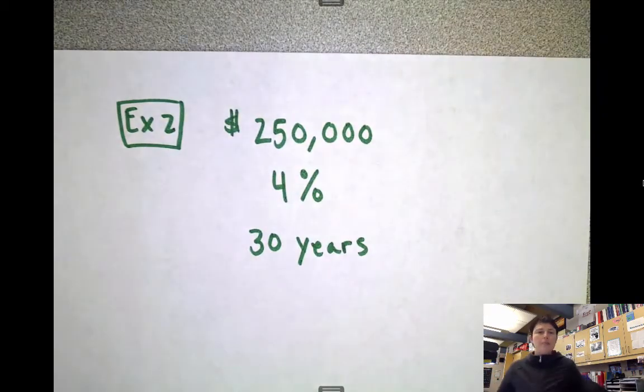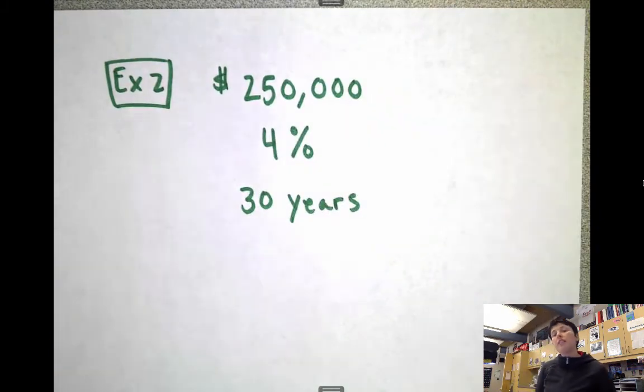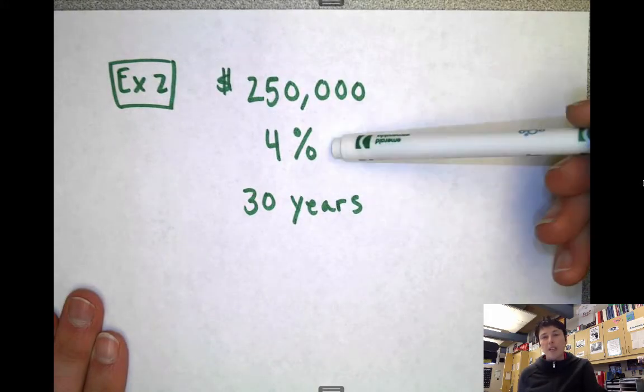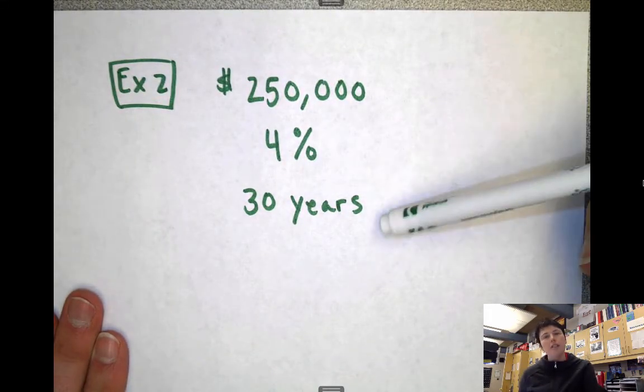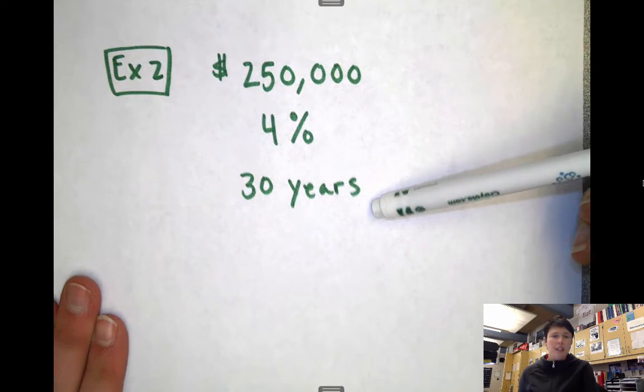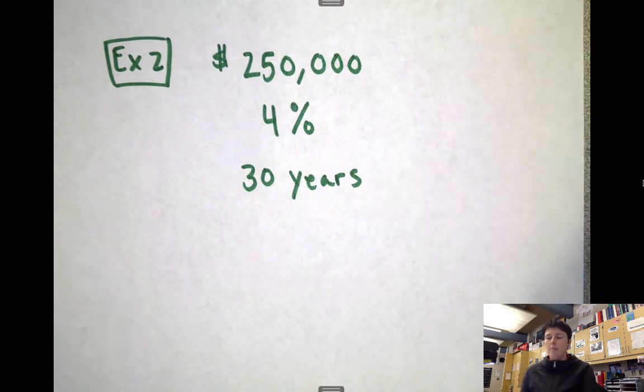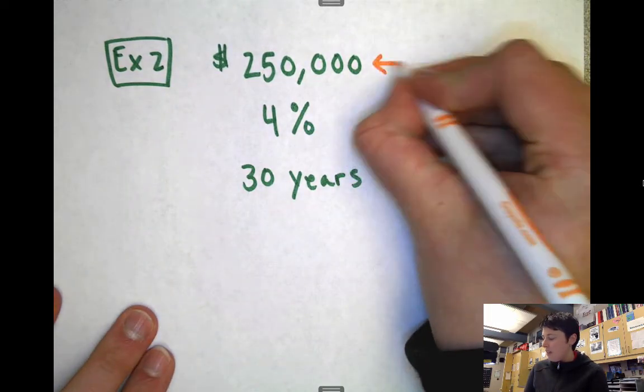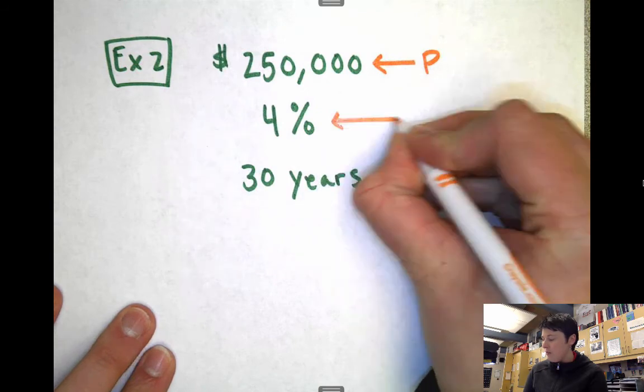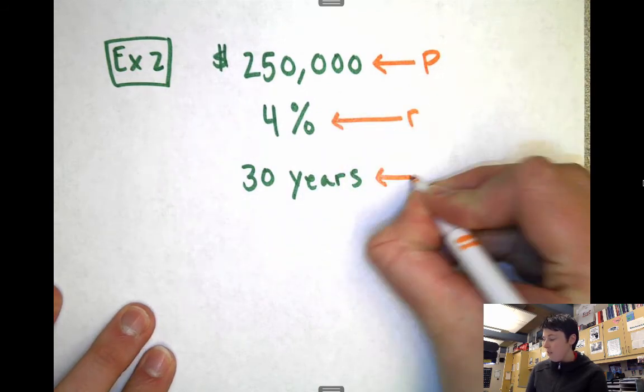All right, so let's say you're going to buy a $250,000 house, kind of an average to low cost for a house. And the bank says, okay, we'll give you the money for the house, but you're going to owe us 4% interest, and we'll give you 30 years to pay this off. That's nice, 30 years, that's a long time. But what does that mean for you? How much are you actually paying for that house? Well, the $250,000 is your principal, the 4% is your rate, and the 30 years is your time.